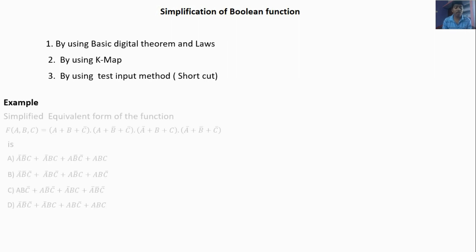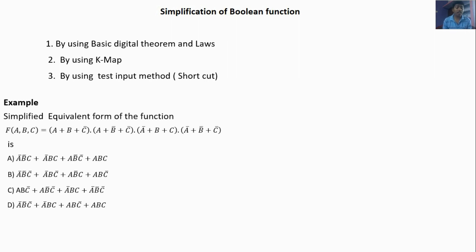For example, a question is given where you have to simplify the given function, and options A, B, C, D are given. If you use the basic digital theorem or K-map to solve the function, it will give complexity as well as be time consuming.